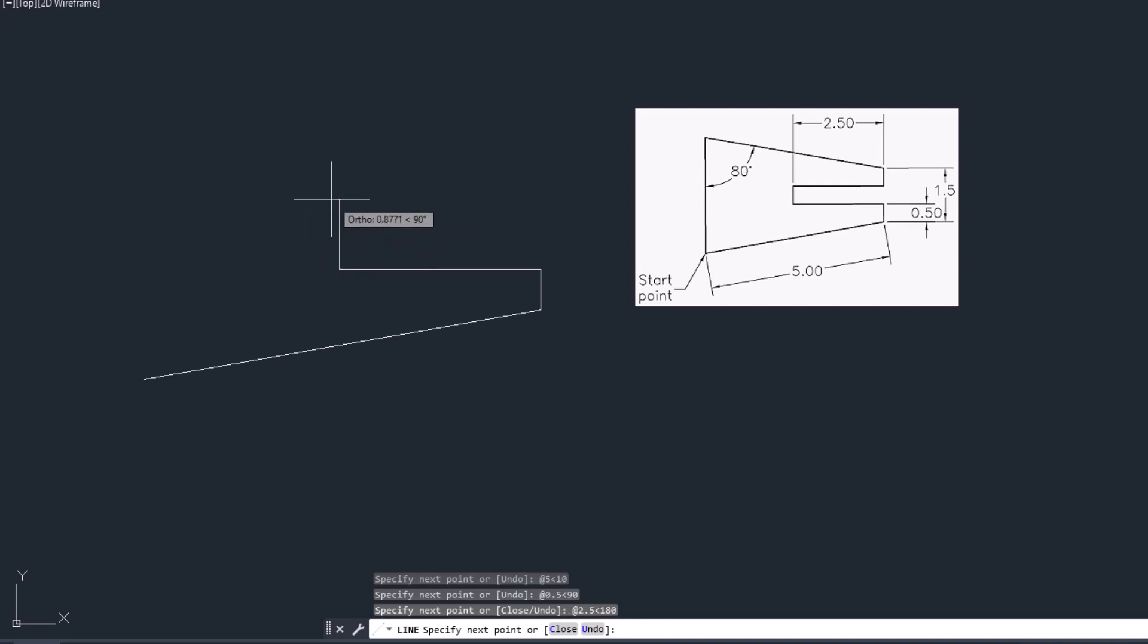Now for the vertical line, which is having 0.5 mm dimension, type shift at the rate 0.5 less than 90, enter.